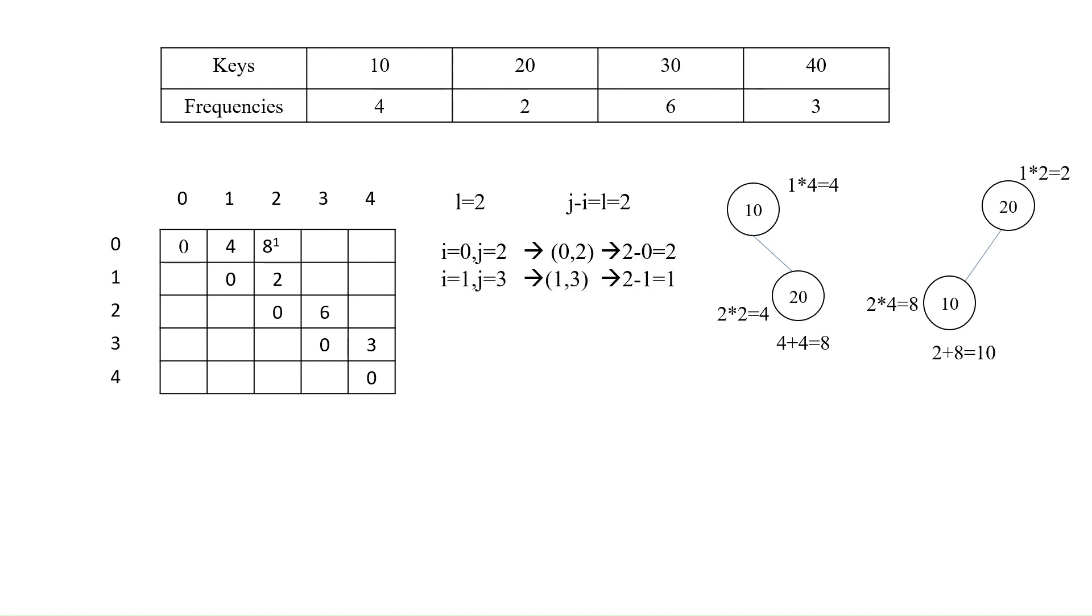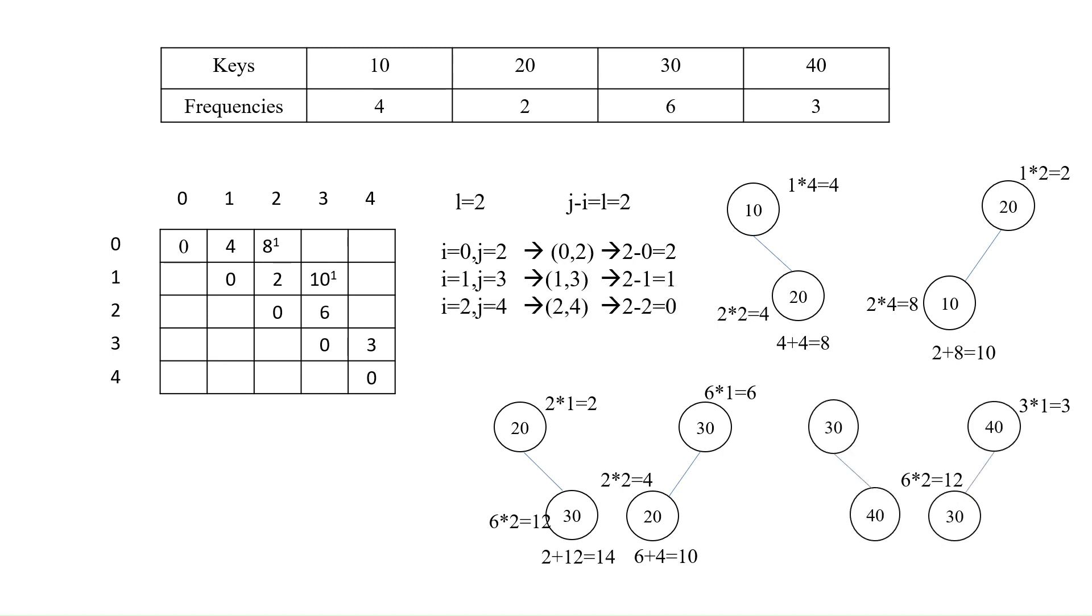Similarly, for keys 20 and 30, the maximum search capacities are 14 and 10 and minimum of those is 10 that is value at 1 comma 3 is 10 with root 10 that is 1. Similarly, for keys 30 and 40, the values at 2 comma 4 is 12 with root 30 that is 3.